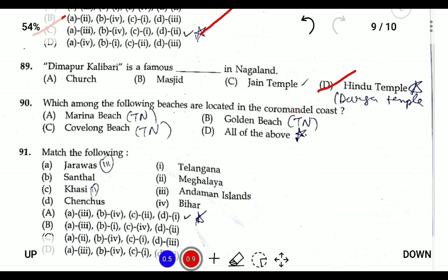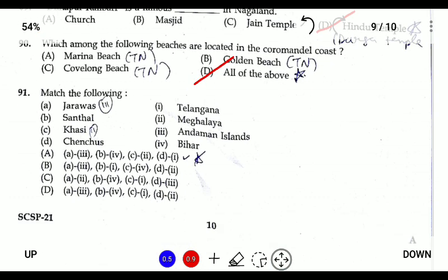Question ninety-one: the Jarawas are located in the Andaman Islands. Birhor Sandals are located in Bihar, Khasi are in Meghalaya, and Chenchus are in Telangana. The answer is A.